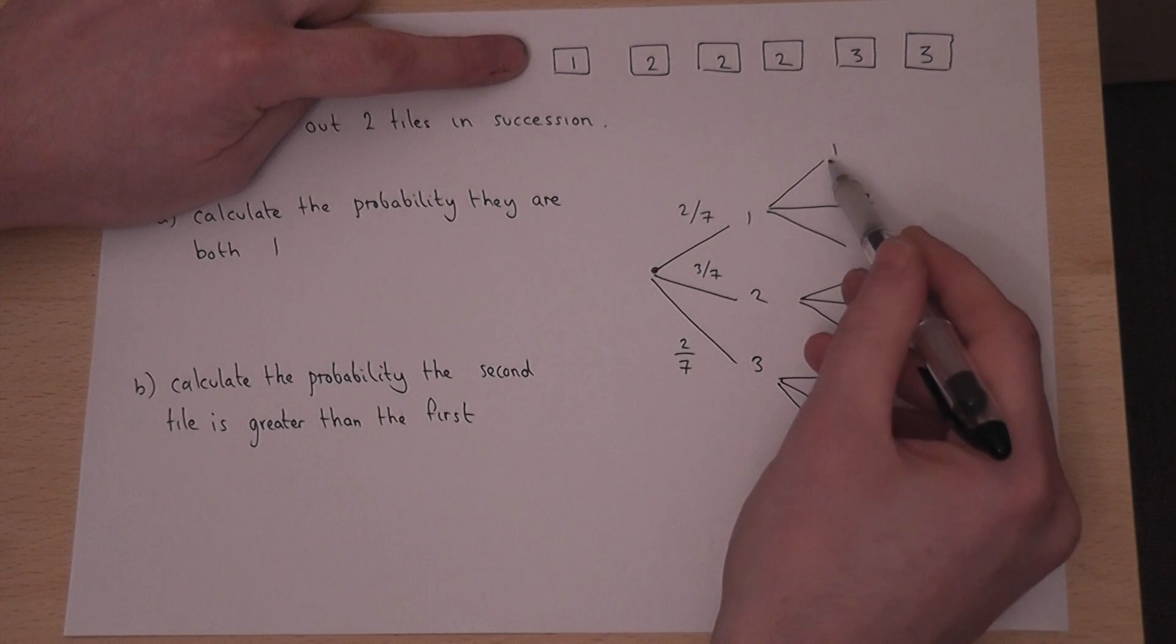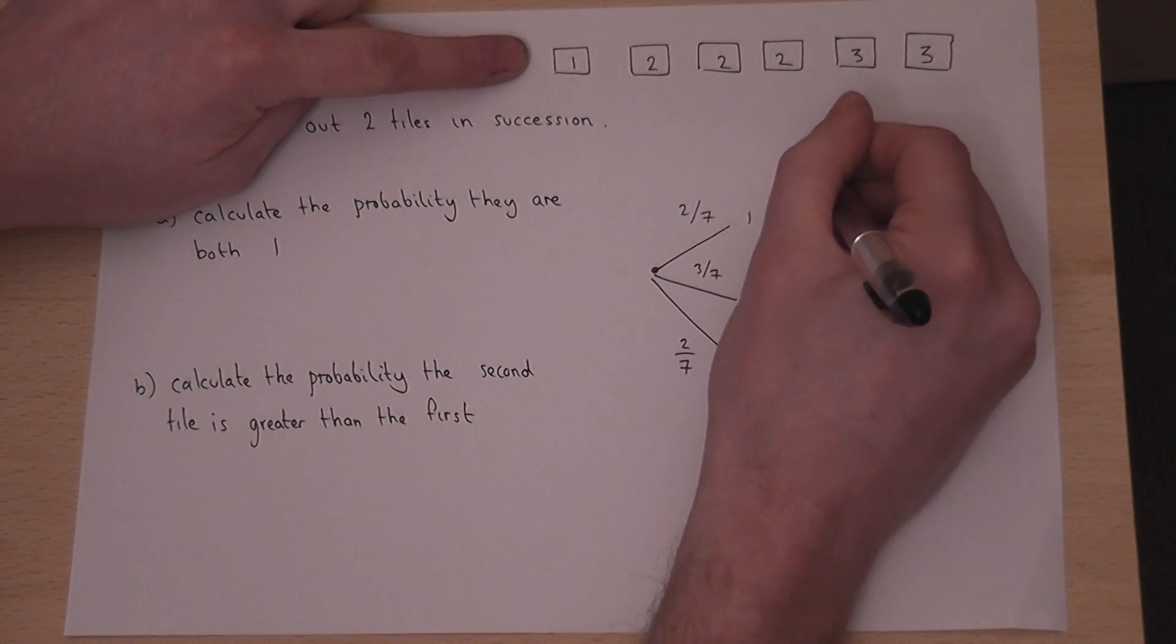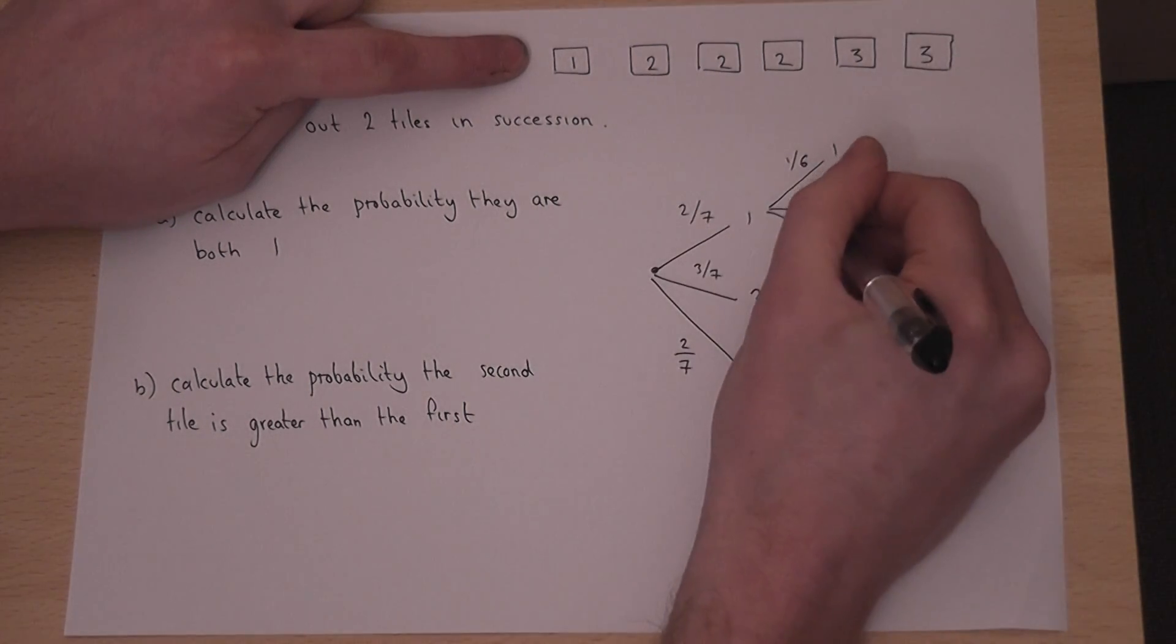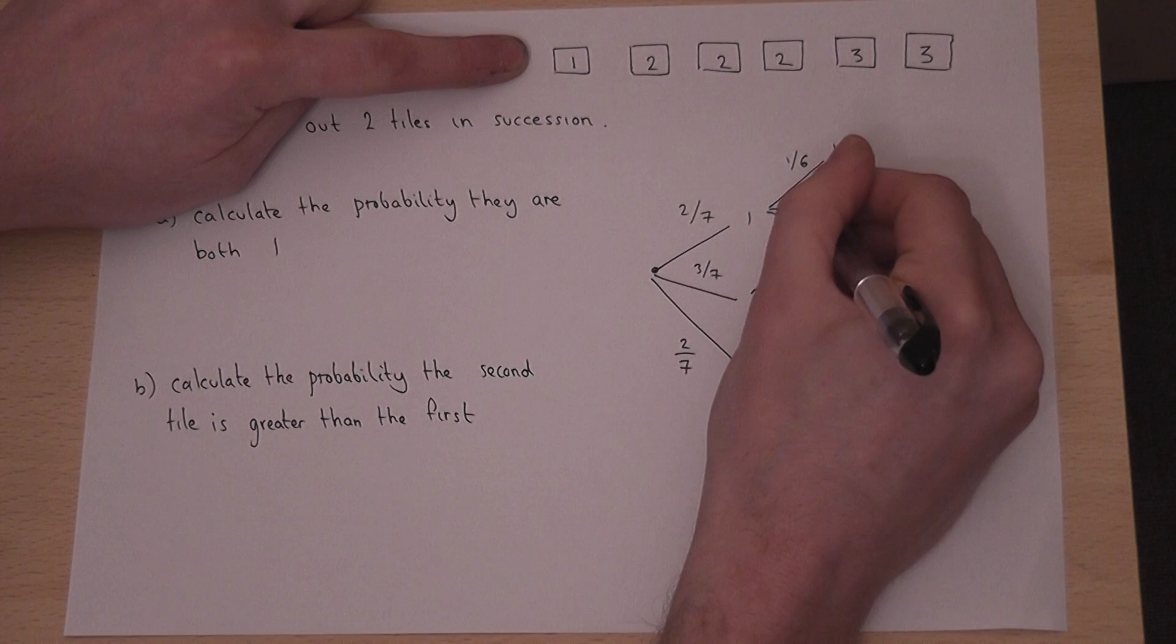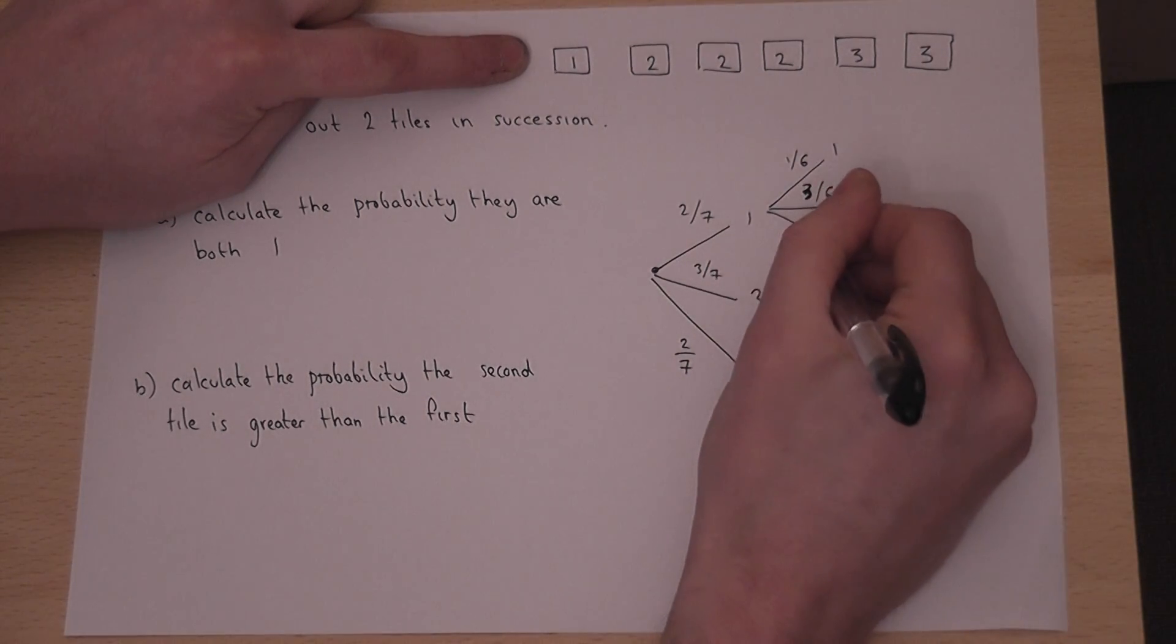So the chance of a one is now one out of six. The chance of a two is three out of six, and the chance of a three is two out of six.